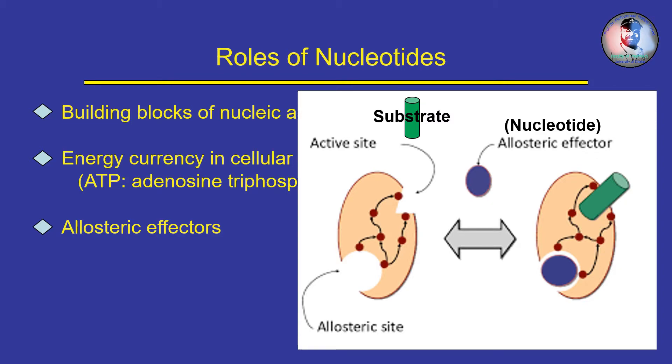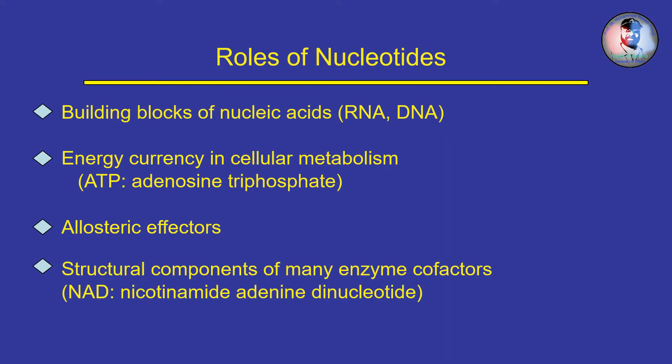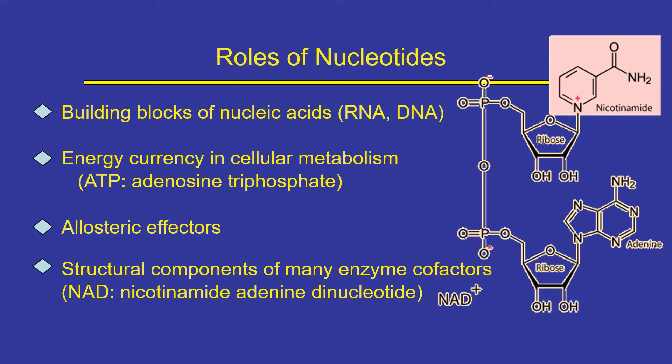Several nucleotides act as enzyme cofactors or coenzymes. They act with enzymes to speed up biochemical reactions. Examples of nucleotide coenzymes are nicotinamide adenine dinucleotide NAD+, nicotinamide adenine dinucleotide phosphate NADP+, and flavine adenine dinucleotide FAD. These three coenzymes are involved in oxidation or hydrogen transfer.